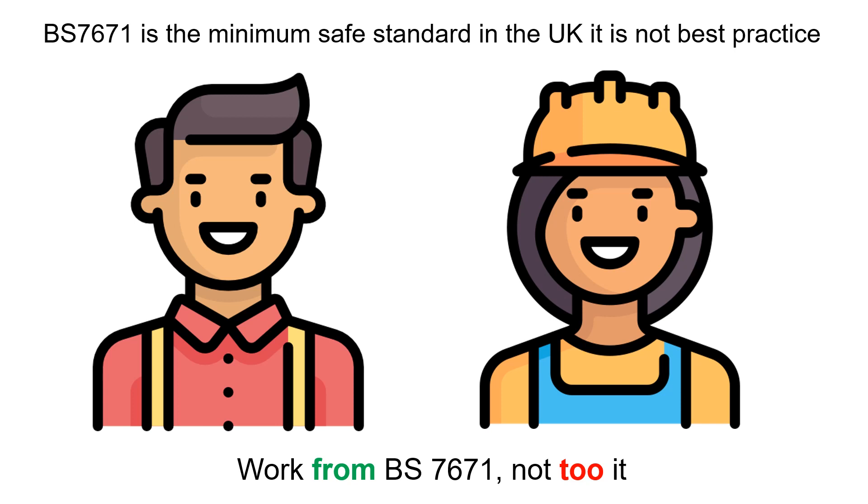There is a well-known saying amongst electricians who try hard to be the best they can be, and that is to work from BS7671 and not to it. Essentially, BS7671 is the minimum safe standard in the UK. It is not best practice. You can choose whether you want to work to the minimum safe standard as set out by the IET, or you can set your own level that you are happy with. And I'm a great believer of you reap what you sow. I personally wouldn't want to be responsible for a house fire that could kill the people living within the property.